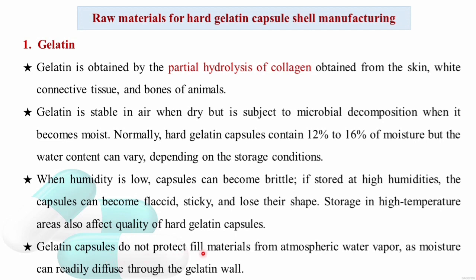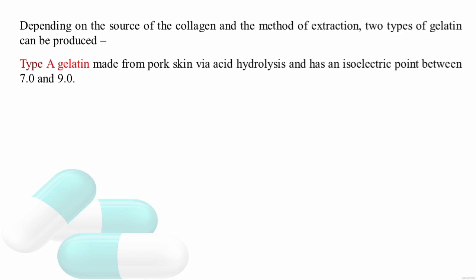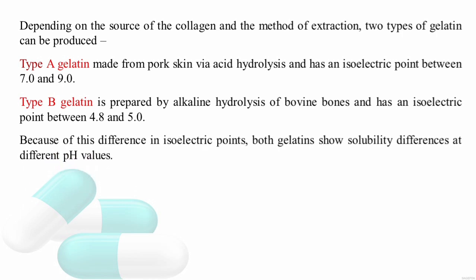Capsules do not protect the fill material from atmospheric water vapor because moisture can readily diffuse through the gelatin wall. Depending on the source of collagen and method of extraction, two types of gelatin are produced: Type A gelatin is made from pork skin via acid hydrolysis and has an isoelectric point between 7 to 9. Type B gelatin is prepared by alkaline hydrolysis of bovine bones and has an isoelectric point between 4.8 and 5.